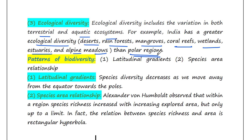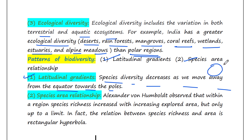The patterns of biodiversity include latitudinal gradients and species-area relationship. For latitudinal gradients, species diversity decreases as we move away from the equator towards the poles — whether the north pole or the south pole. The equatorial region has a very good climate, so it supports more species diversity compared to the poles.